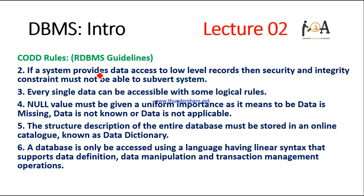The second rule states that if a system provides data access to low-level records, it must ensure that security and integrity constraints are not bypassed. If bypassed, your system will be less secure and data loss chances increase. This must be kept in practice.